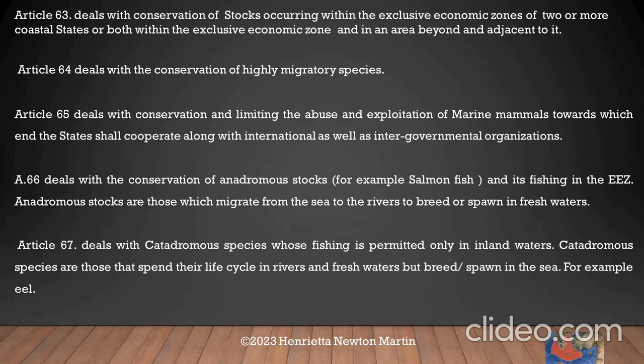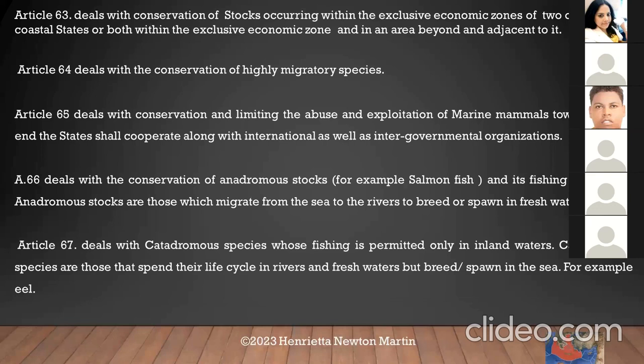Article 66 deals with conservation of anadromous stocks — for example, salmon fish. Anadromous stocks are fish which migrate from the salty water, that is from the sea, to the rivers and fresh water to lay their eggs — to breed or spawn. Those that move from sweet waters to salty waters are called catadromous species — for example, eel. This is dealt with in Article 67.